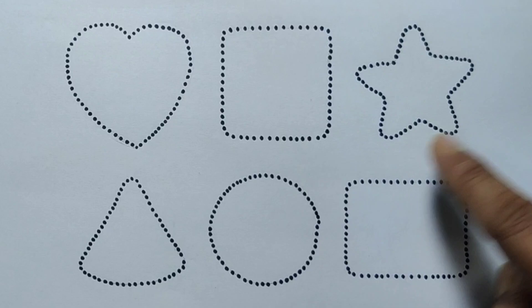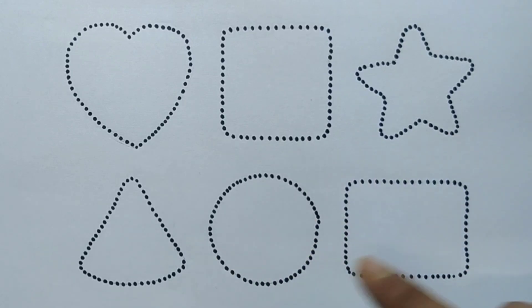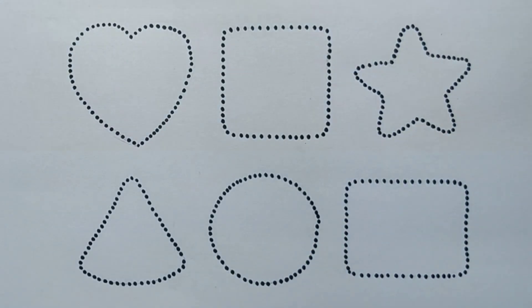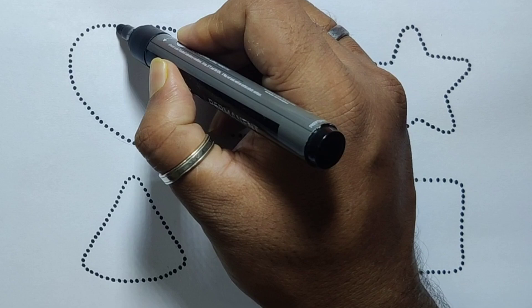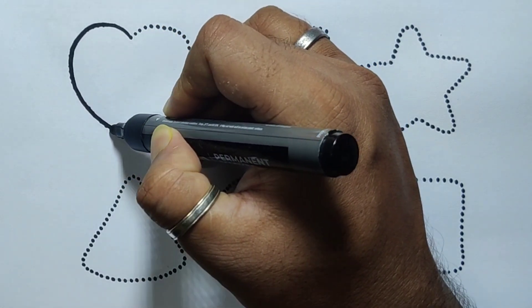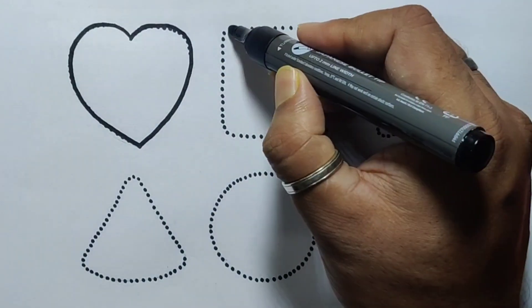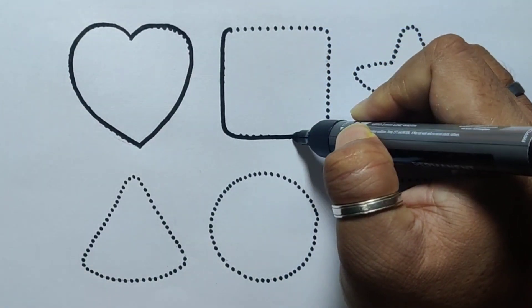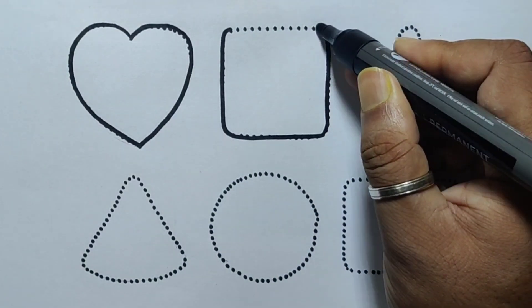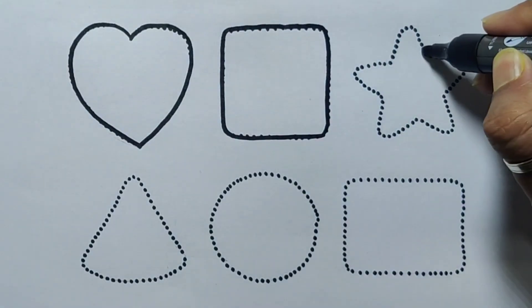First we're going to draw the shapes: heart, square, star, triangle, circle, and rectangle.